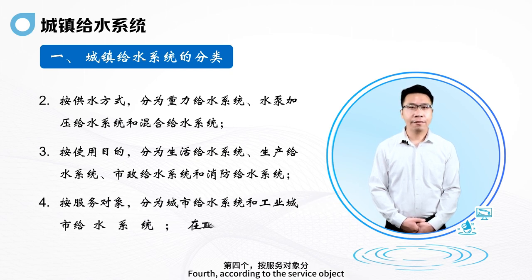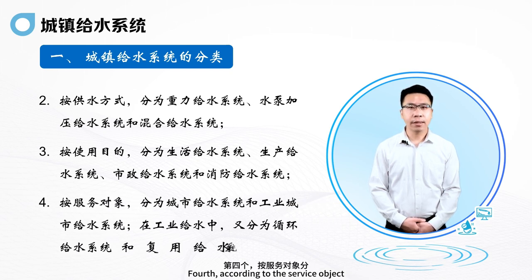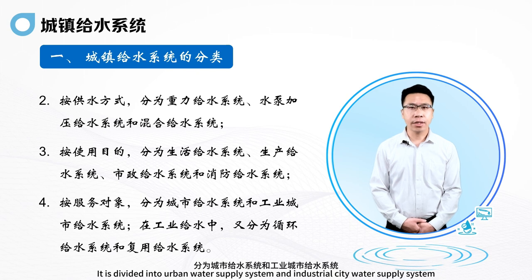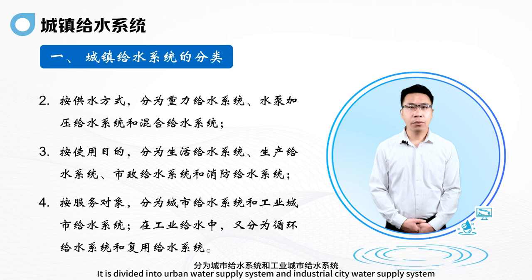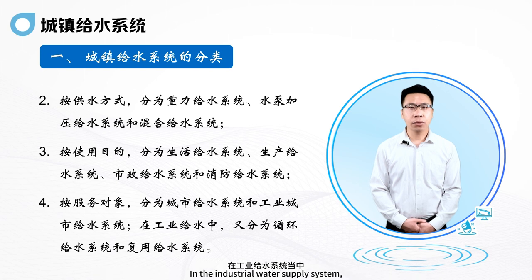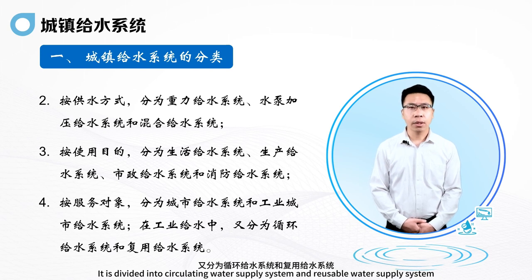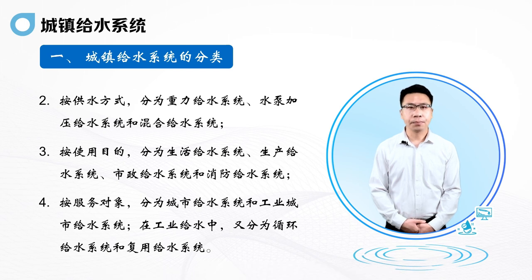Fourth, according to the service object, it is divided into urban water supply system and industrial city water supply system. Within the industrial water supply system, it is further divided into circulating water supply system and reusable water supply system.